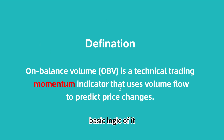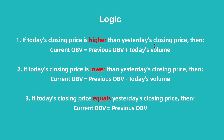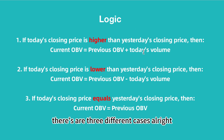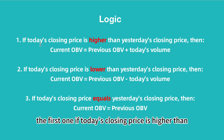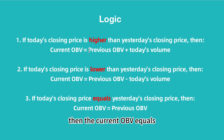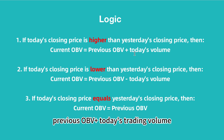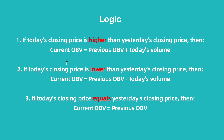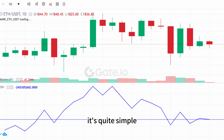Let's get to the basic logic. There are three different cases. The first one: if today's closing price is higher than yesterday's closing price, we call that bullish. Then the current OBV equals the previous OBV plus today's trading volume. It's a bit complex, so let's have a look at the chart — it's actually quite simple.